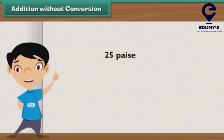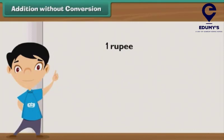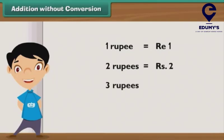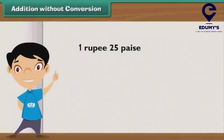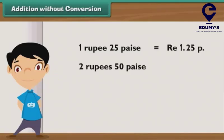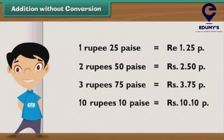Addition without conversion. We can write 25 paisae as 25P. In the same way, we can write 50 paisae as 50P and 75 paisae as 75P. We can write 1 rupee as rupee 1. 2 rupees can be written as rupees 2, 3 rupees as rupees 3, 4 rupees as rupees 4, and so on. So, 1 rupee 25 paisae is written as ₹1.25P, 2 rupees 50 paisae as ₹2.50P, 3 rupees 75 paisae as ₹3.75P, and 10 rupees 10 paisae as ₹10.10P.